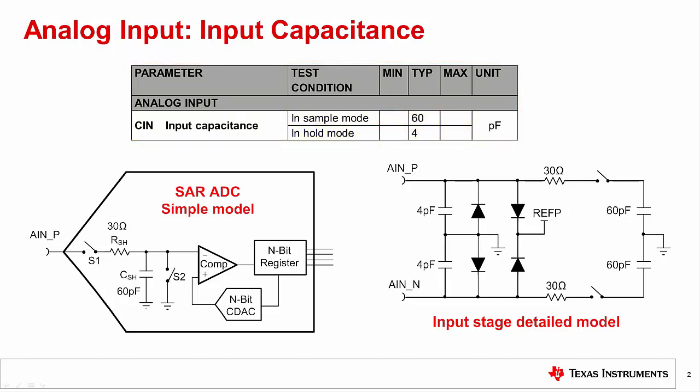The SAR ADC simplified model shown on the left helps us get a basic idea of what sample mode and hold mode mean. In sample mode, the switch S1 is closed. This connects the 60 picofarad capacitor to the external signal applied at the input, AIN_P. The goal of the sampling process is to store the input signal on the sampling capacitor. The sample cycle is often called the acquisition cycle.